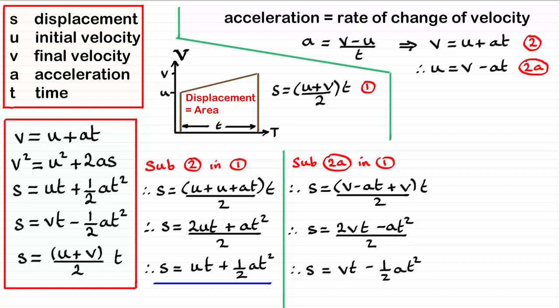And you end up with vt minus a half at squared. And you can see that that is this equation here. So we'll underline that. I might as well underline these two because we've already established that those two were equations used here and here.